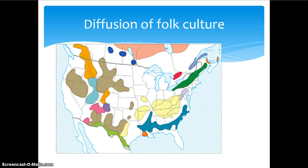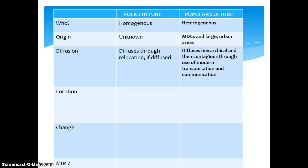Popular culture differs from folk culture because folk culture diffuses through relocation diffusion. Folk culture really doesn't move on its own. The Amish are in the United States because they moved here — the Amish culture isn't spreading rapidly throughout the country; it stayed in one spot and got here because the Amish people moved from Europe to the United States. So on the chart: folk culture — homogenous groups, anonymous origin, diffuses through relocation; popular culture — heterogeneous groups, originates in MDCs with large urban areas, diffuses hierarchically then contagiously through modern transportation and communication.